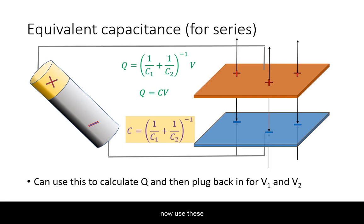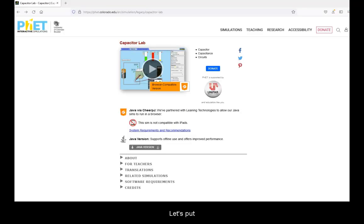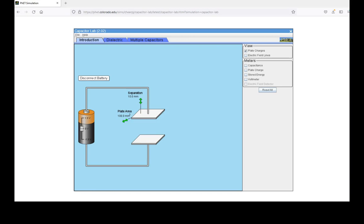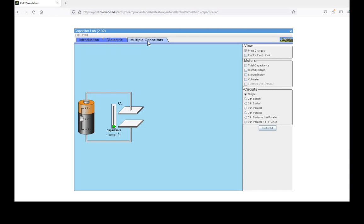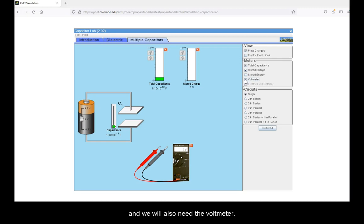We can now use these to back calculate the voltage drop across each element. Let's put this mathematical theory to the test in the capacitor lab by PHET simulations. Choose multiple capacitors, enable the calculation of total capacitance and stored charge, and we will also need the voltmeter.